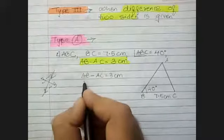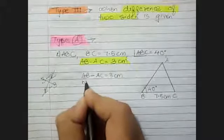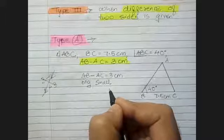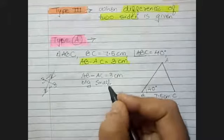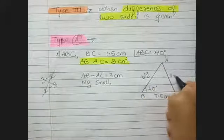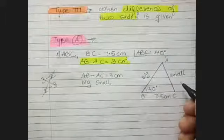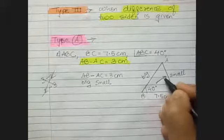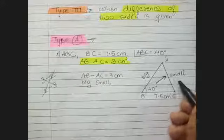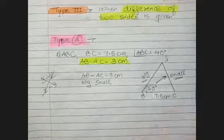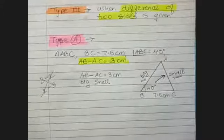In Type A, AB minus AC is given — meaning AB is the bigger side and AC is the small side. The side opposite the 40-degree angle is small, and the other side is big. This determines the shape of the rough figure.